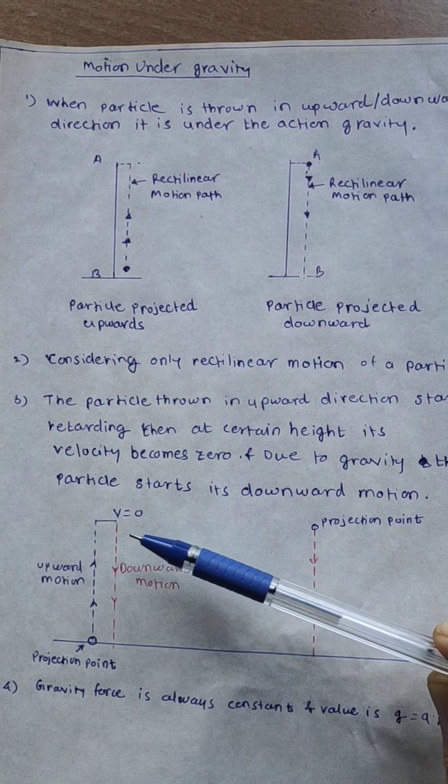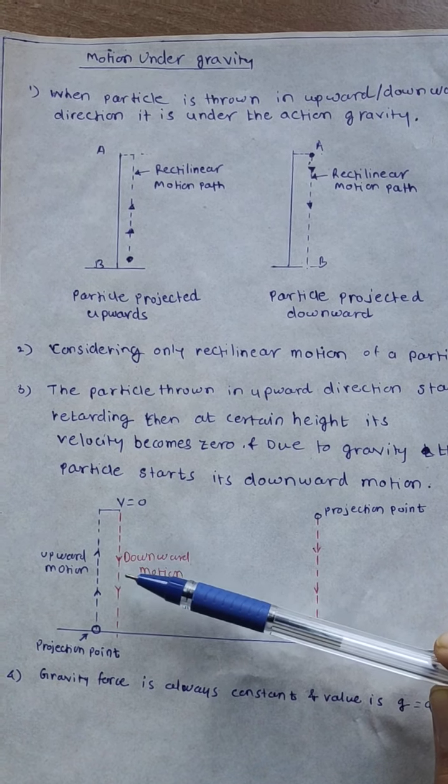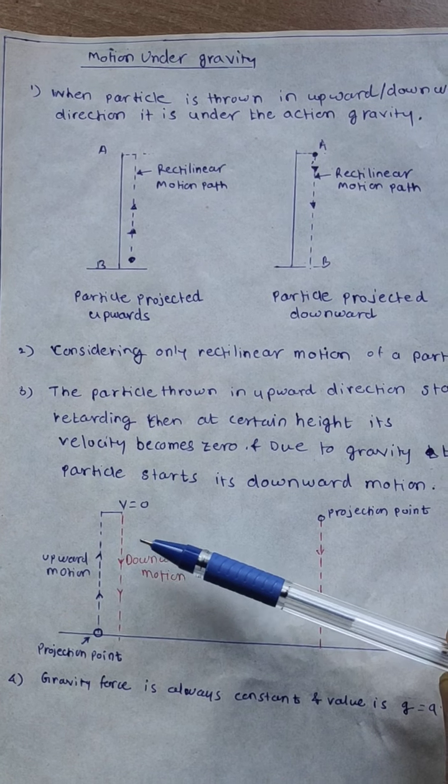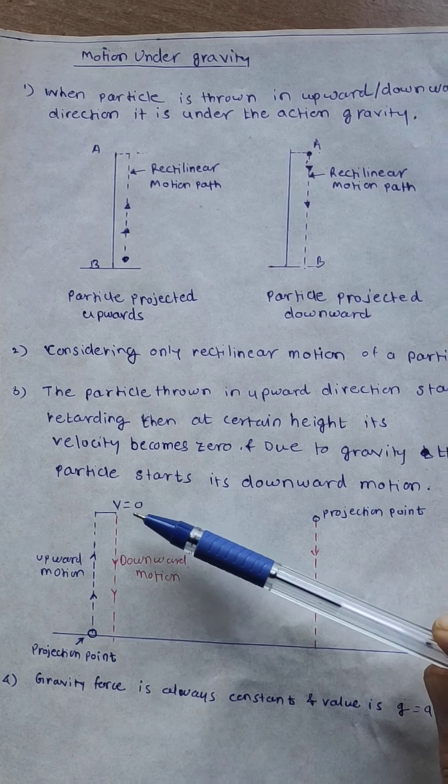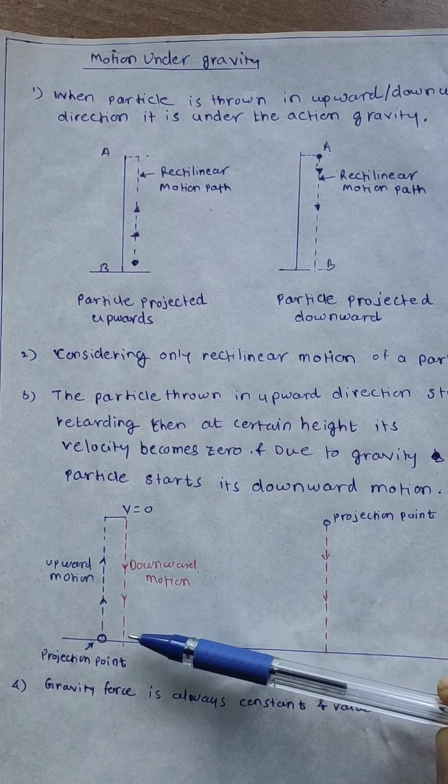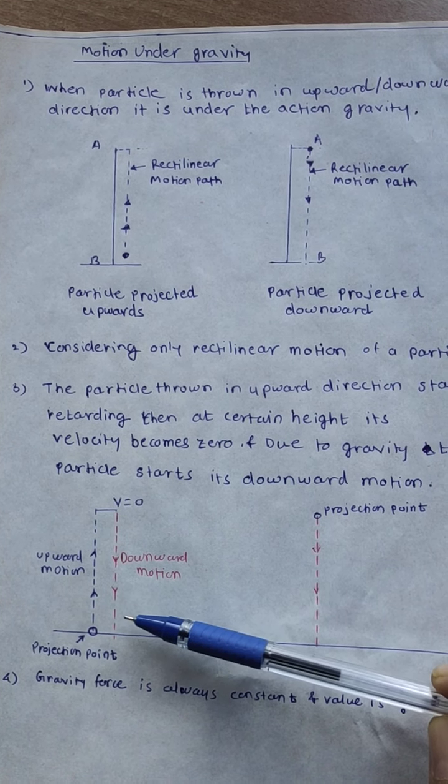And then it will come in downward direction as the gravity will act in downward direction. So it will come from that maximum height to the original position again.